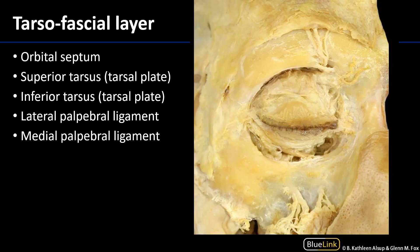The palpebrae are variously layered, and within the palpebrae we find the tarsofascial layer. The tarsofascial layer of the orbit has many different facets, one of which is the extension of the periosteum from the frontal bone, which extends as the orbital septum. This orbital septum separates the contents of the orbit from the palpebrae, and it blends into the tarsal plates, or the tarsi. There is a superior tarsus and an inferior tarsus, which give rigid support and shape to the eyelids.